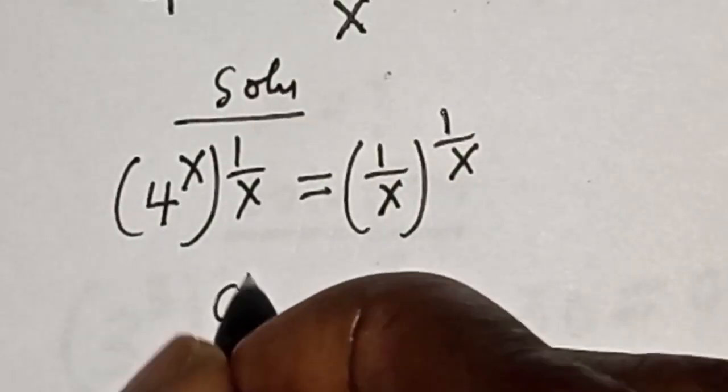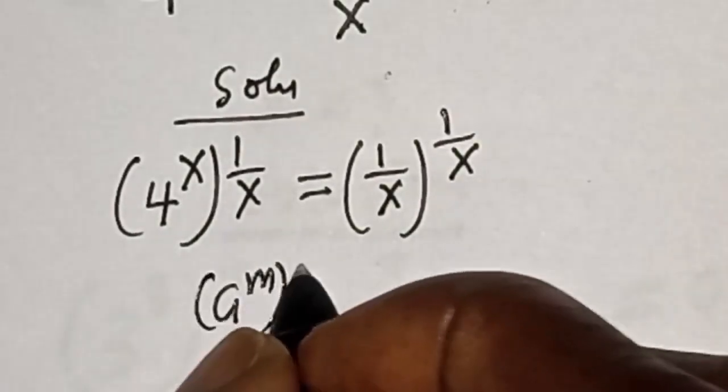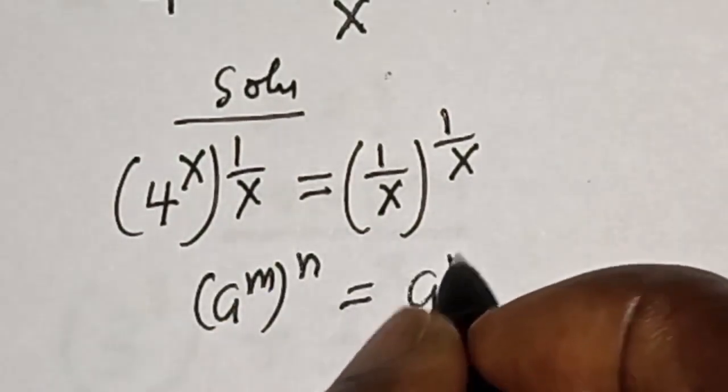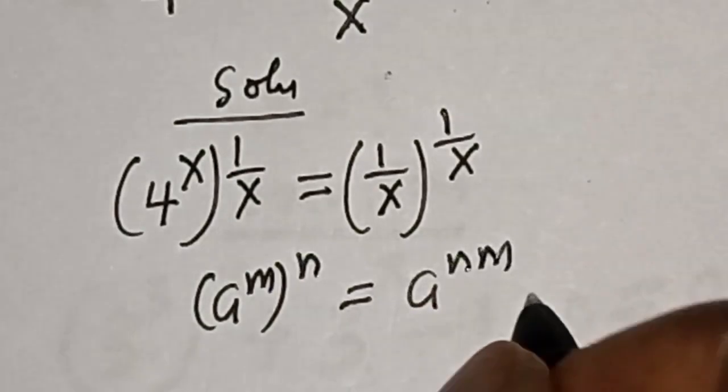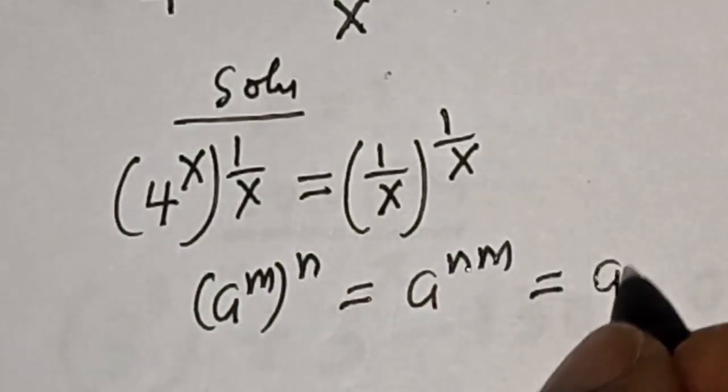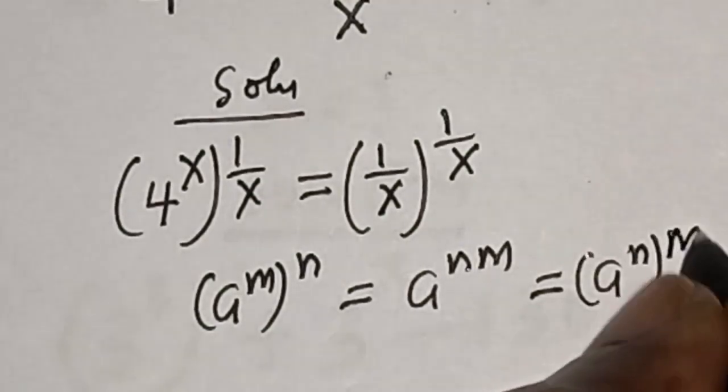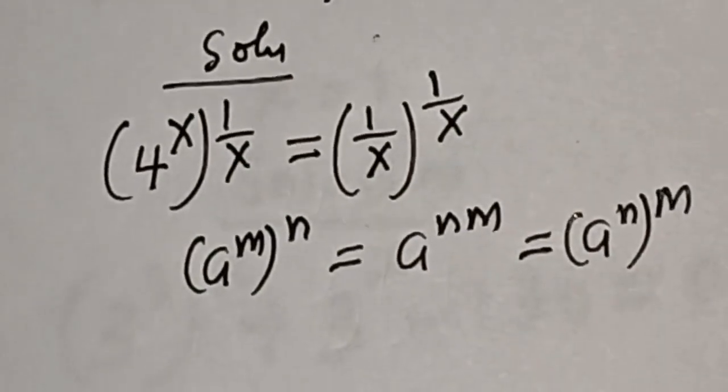Take note of this rule: a to the power m, all to the power n, is equal to a raised to power n times m, which is equal to a raised to power n, all to the power m.